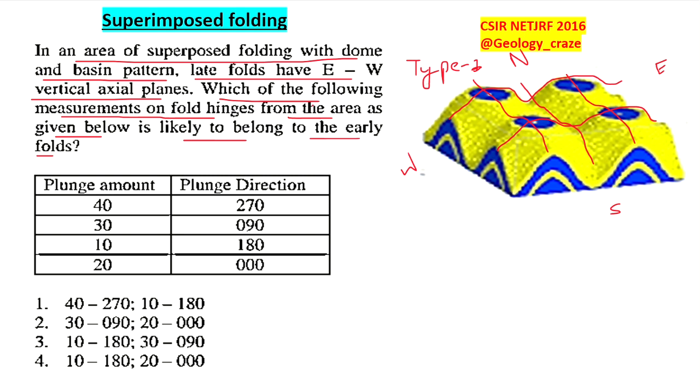One is east-west in the north-south direction. The late one is east-west. In east-west we are getting F2, so it means in north-south we are getting F1.